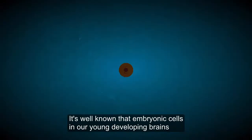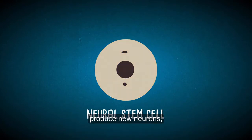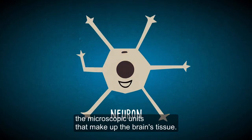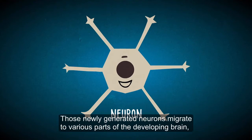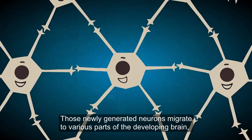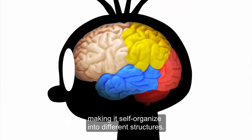It's well known that embryonic cells in our young, developing brains produce new neurons, the microscopic units that make up the brain's tissue. Those newly-generated neurons migrate to various parts of the developing brain, making it self-organize into different structures.